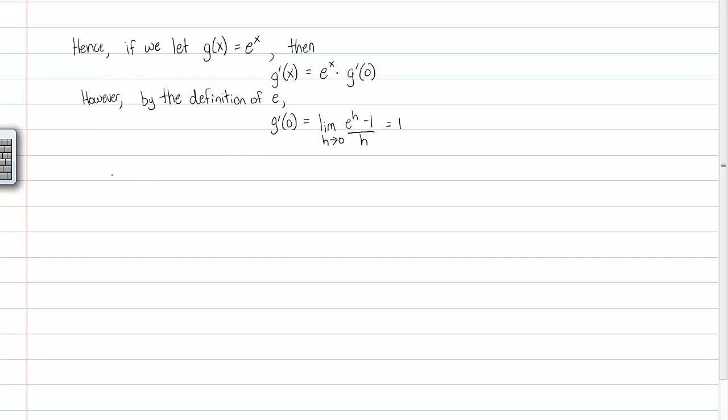Therefore, it's pretty easy to see at this point that g prime of x is equal to e to the x times one. Remember, g was e to the x. The derivative is e to the x. We are done. QED.